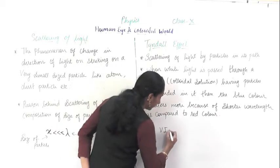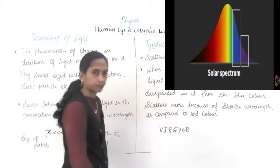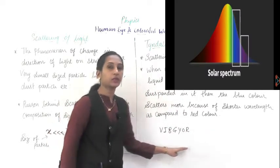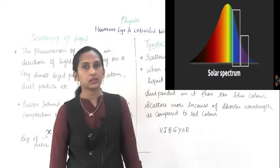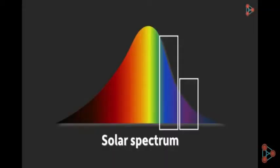VIBGYOR pattern you can see. The wavelength of these colors: violet, blue, green — all these have short wavelengths. And yellow, orange, red — these have a larger wavelength.